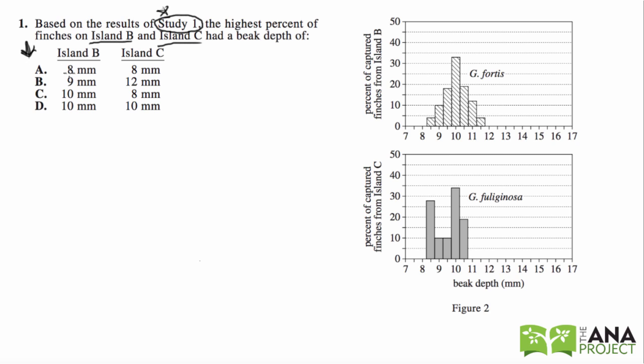So A, 8 millimeters island B, 8 millimeters on island C. Answer choice B, 9 millimeters, 12 millimeters. 10 millimeters, 8 millimeters, and answer choice D, 10 millimeters, 10 millimeters. So we have the beak sizes.